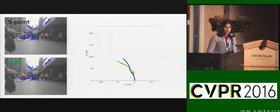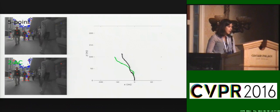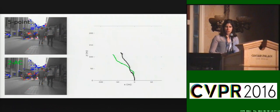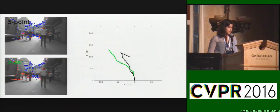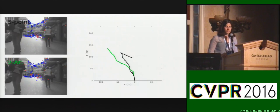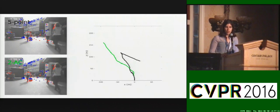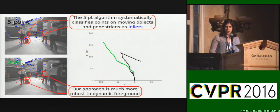Moving forward, both trajectories perform similarly up to a point where the five-point method selects points on the pedestrian as inliers. This causes a gross error in the trajectory which takes an impossible turn to the right. It can be seen that our method is systematically more robust to dynamic scenes and that the five-point scheme tends to select moving points as inliers, as shown in these frames.